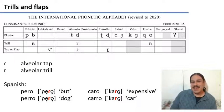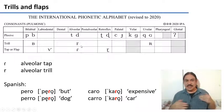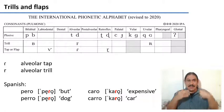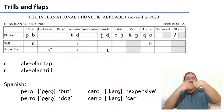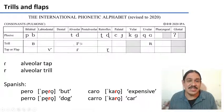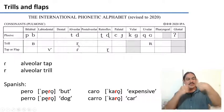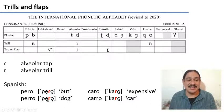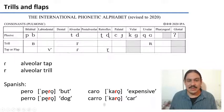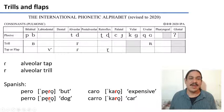Let's look at some other manners of articulation. We have trills and taps. A trill is an articulation where your tongue or your lips make contact rapidly and several times. For example, this is the Spanish sound 'rr' — where your tongue touches your alveolar ridge several times. We have this in words like 'perro', 'carro', 'pero', 'caro'.